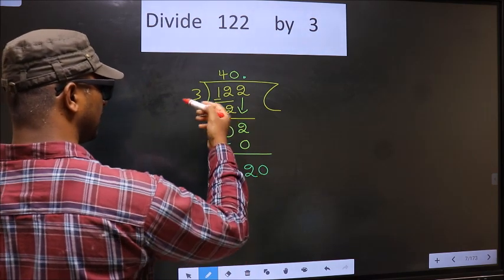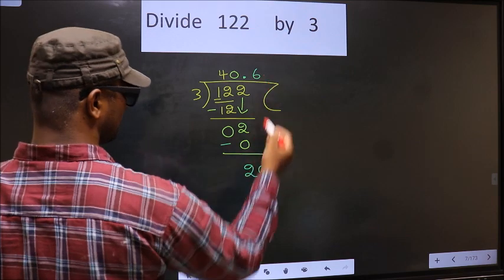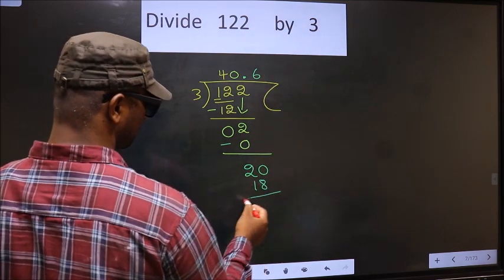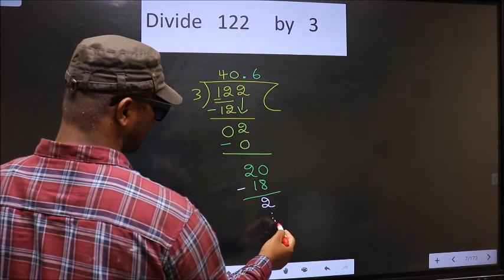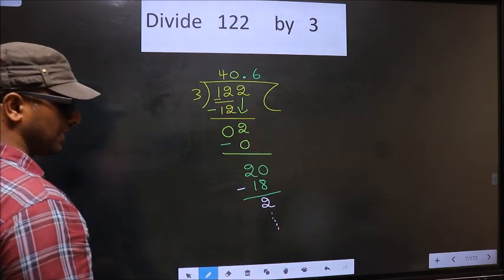A number close to 20 in 3 table is 3, 6, 18. Now you subtract. You get 2. And the division continues. I am not doing that.